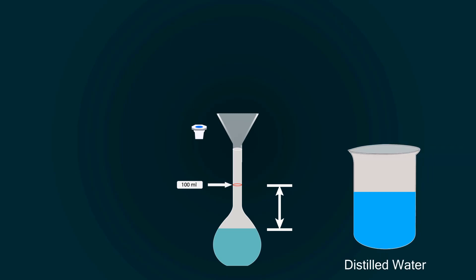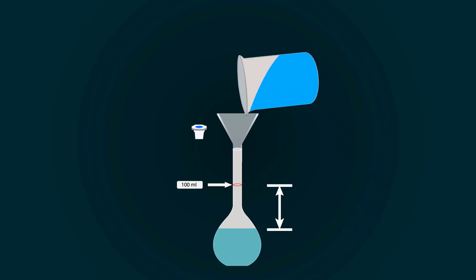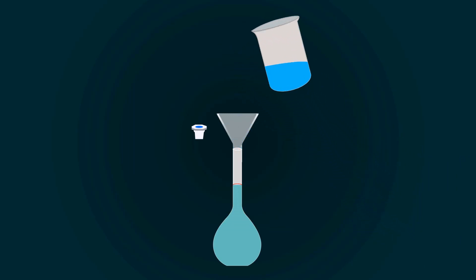So take more distilled water into an empty beaker and start pouring it into the volumetric flask.